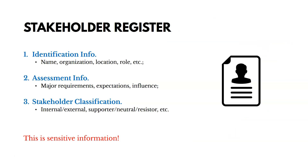Let's talk about the stakeholder register. When we identify stakeholders, the key output is going to be the stakeholder register. This is pretty sensitive information about your stakeholders — you don't want this to get out. It helps you classify, prioritize, and analyze your stakeholders to determine how to best engage with them. It could include identification information like their name, organization, role, and location, and then assessment information — their major requirements and expectations, how much they could influence the outcomes, and their classification: internal or external, supporter or resistor.